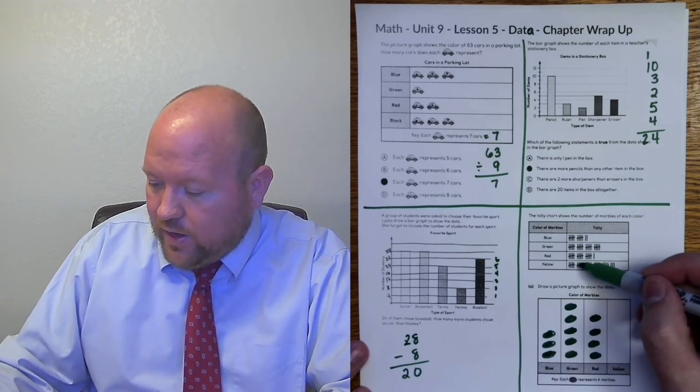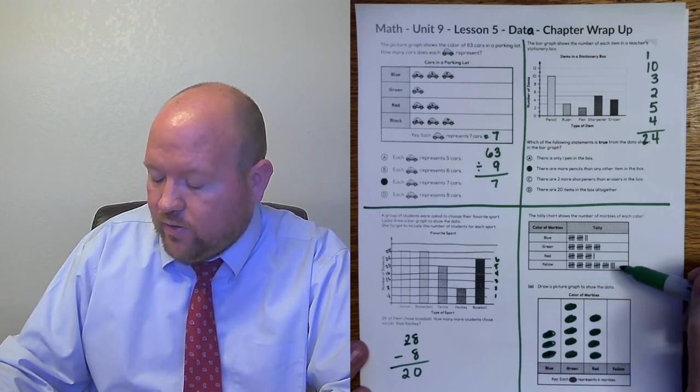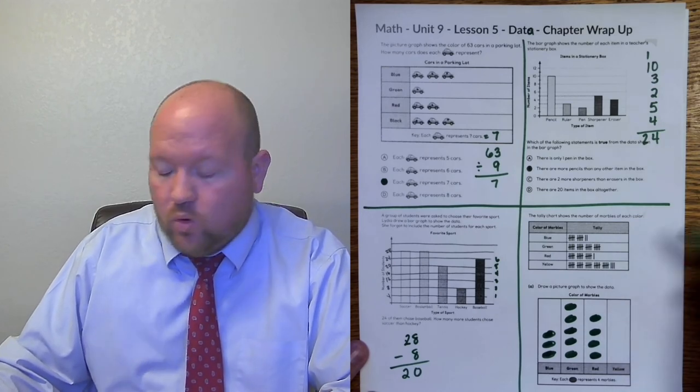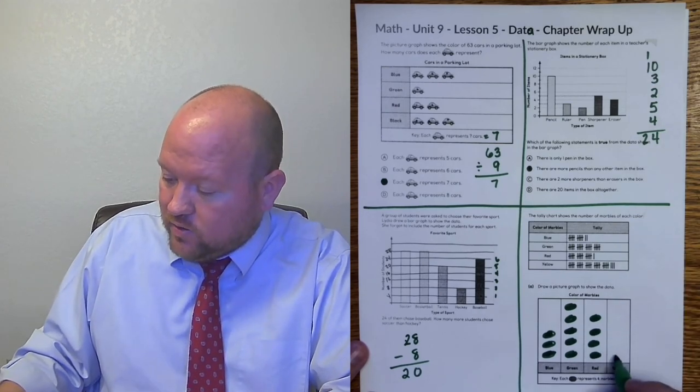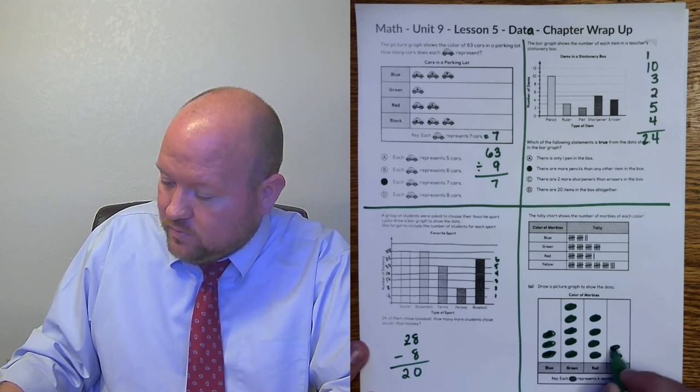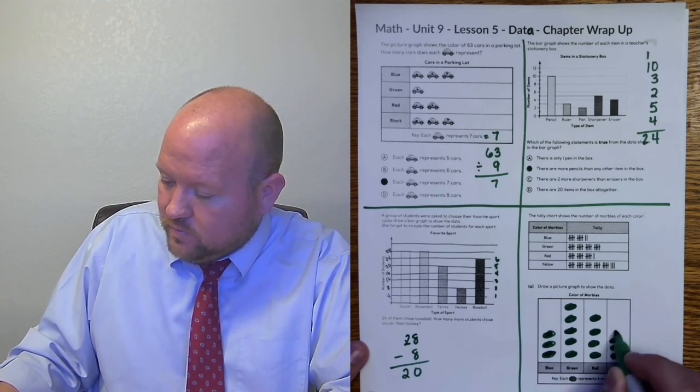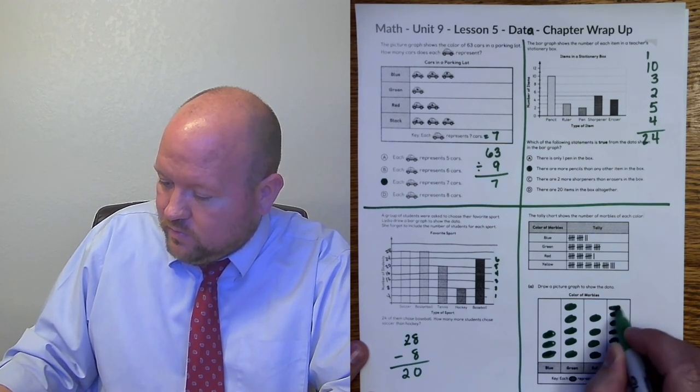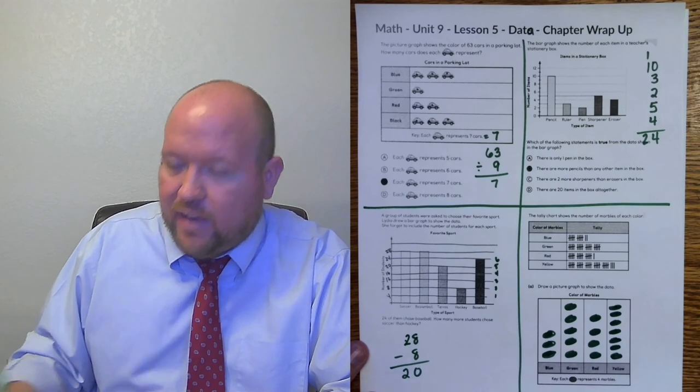And lastly, five, 10, 15, 20, 25, 26, 27, 28. 28 divided by four is seven. So I'll make these a little bit tighter. One, two, three, four, five, six, seven.